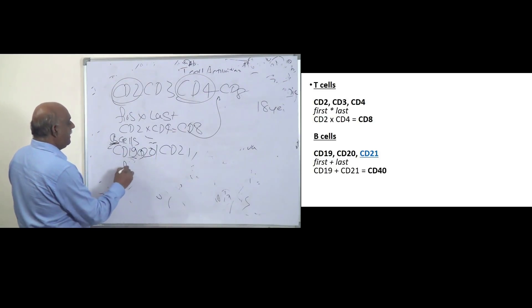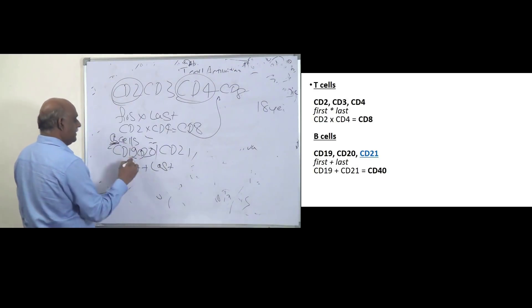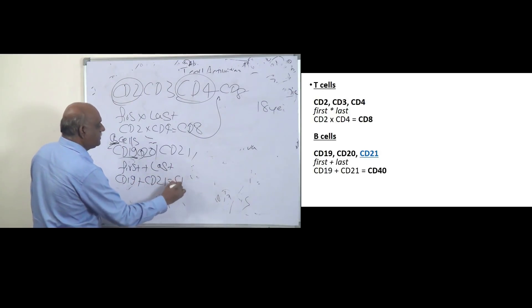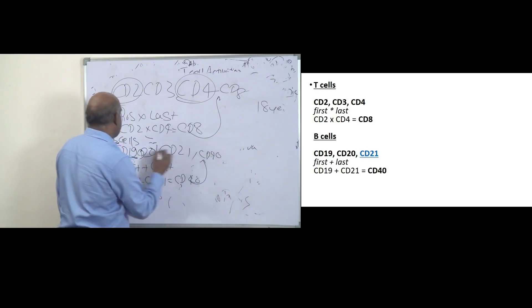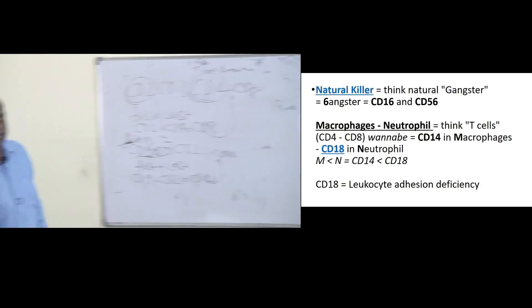Additionally, add first plus last. That means CD19 plus CD21 is equal to CD40. Even CD40 is also B-cell marker is what you are going to remember. So now you know what are the T-cells and what are the B-cell markers.